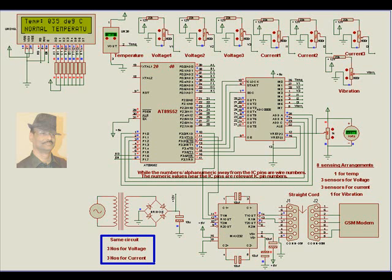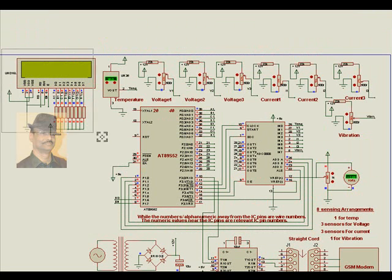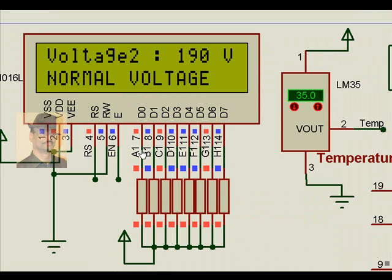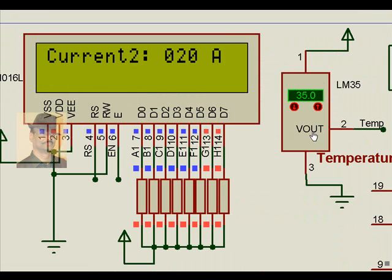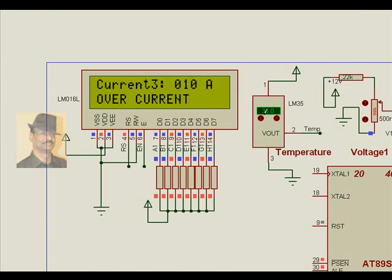Now once we operate this, we find that I get the exact reading of say 35 degrees as far as the temperature is concerned, and the voltage, current, all these things as per the requirement. You see temperature is 35.